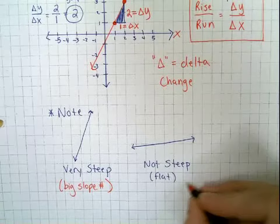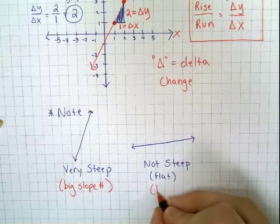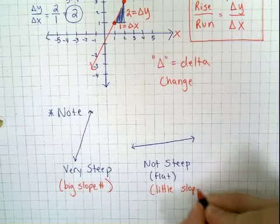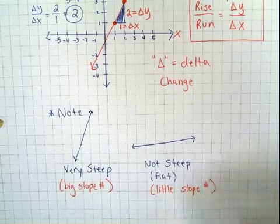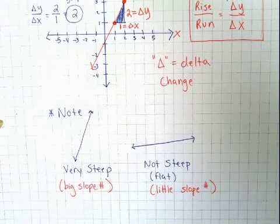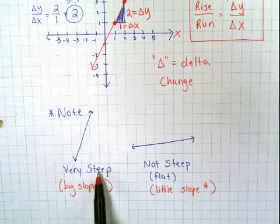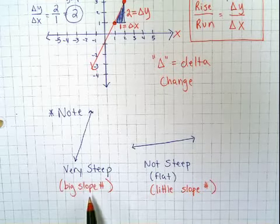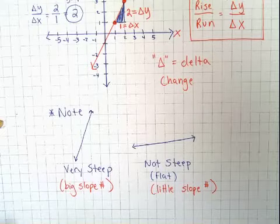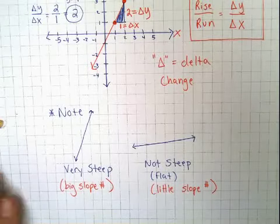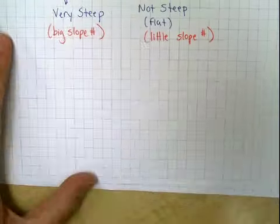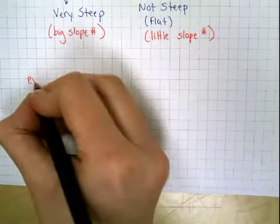If it's not steep, it's going to have a little number. So it's going to have, this example is going to have a little slope number. And that's a really big difference. A big slope versus a little slope has to do with steepness. Very, very steep, very big slope triangle. Not very steep, really flat, little triangle, little slope number. And it's all measured with these delta y's over delta x's. So let me slide this up and give you one last example here.